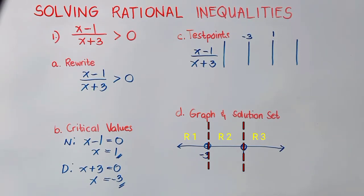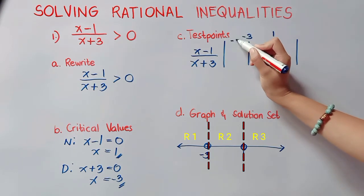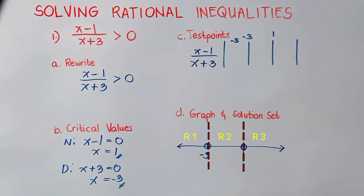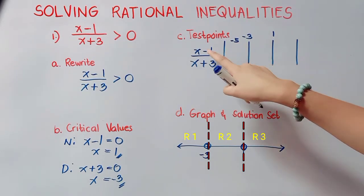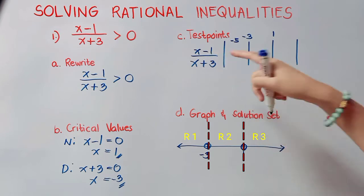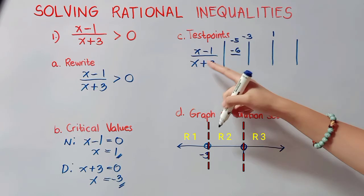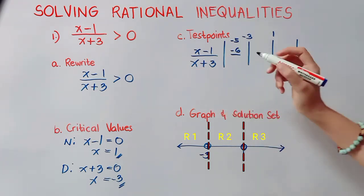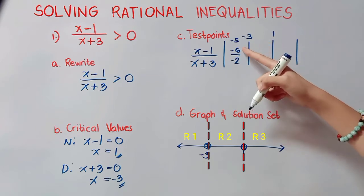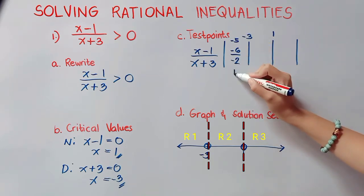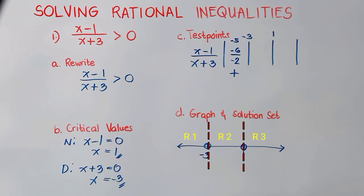Let us now test region 1. Think of any point from this region — it could be negative 4, negative 5, negative 6, and so on. For this example, I will use negative 5. Substituting negative 5: negative 5 minus 1, same sign, add, gives negative 6. And negative 5 plus 3 is negative 2. Negative divided by negative results in a positive answer.